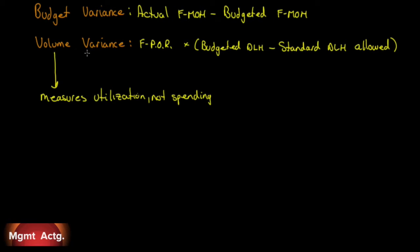The volume variance, on the other hand, is the fixed portion of our predetermined overhead rate multiplied by the direct labor hours we budgeted for, minus the direct labor hours we are allowed given our output — our standard direct labor hours.